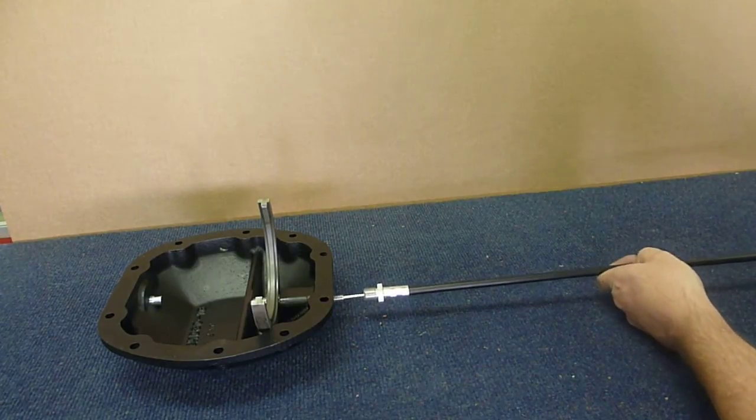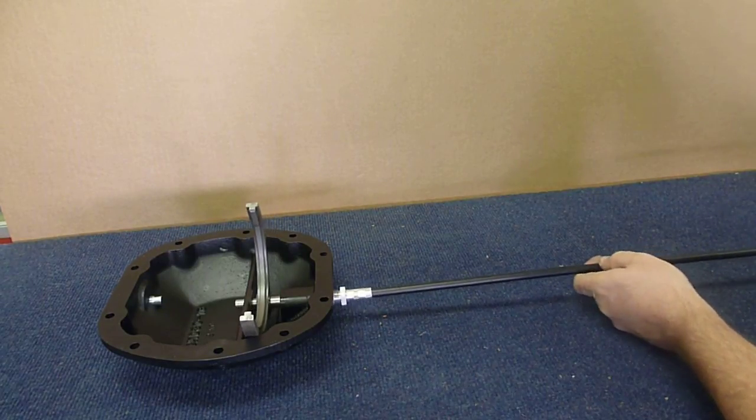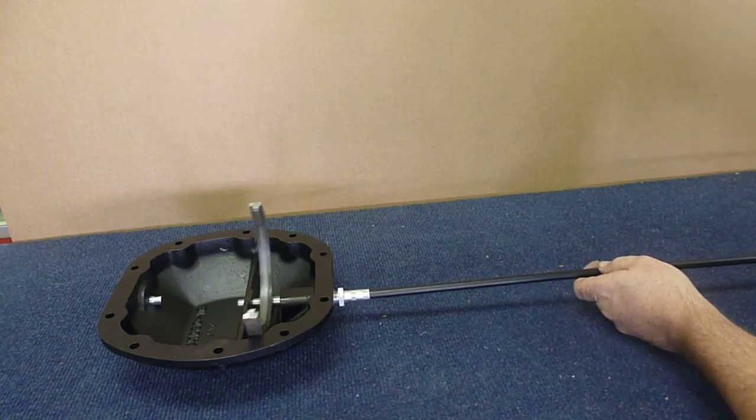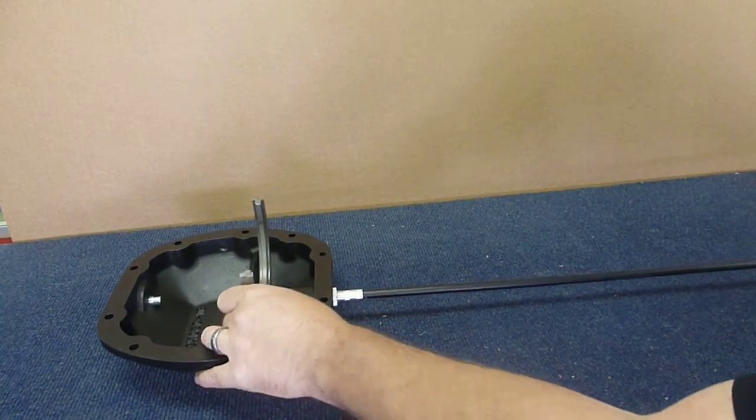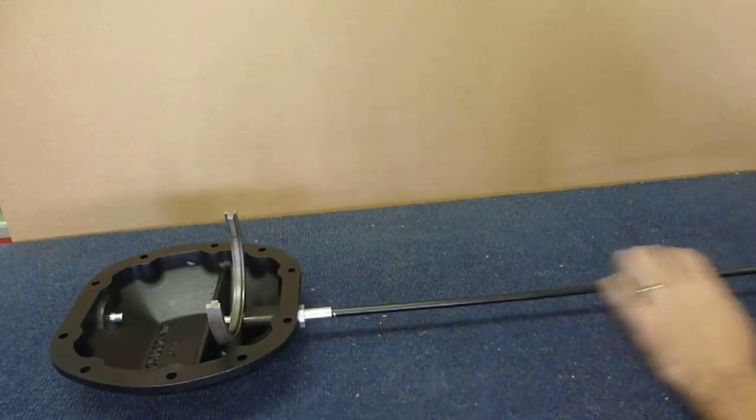So the first thing you want to do is just get it in there and start it maybe a thread and make sure you've got a hold of the fork with the inner cable.